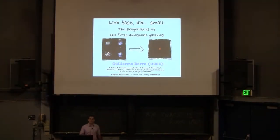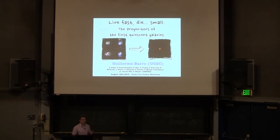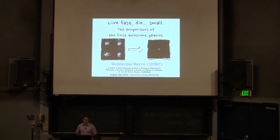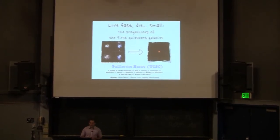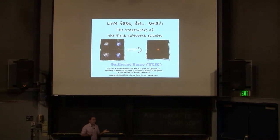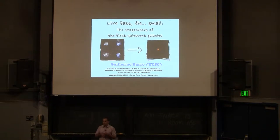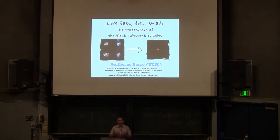I'm a postdoc here and what I'm about to show you is the work that we have been doing here in Santa Cruz with a lot of collaborators from the CANDELS survey. It's the analysis of what we think happens in the formation of the first quiescent galaxies. During these 15 minutes I hope to convince you that forming a quiescent galaxy is not just about stopping the star formation or preventing the galaxy from forming new stars — it also implies a significant change in the structure of galaxies.